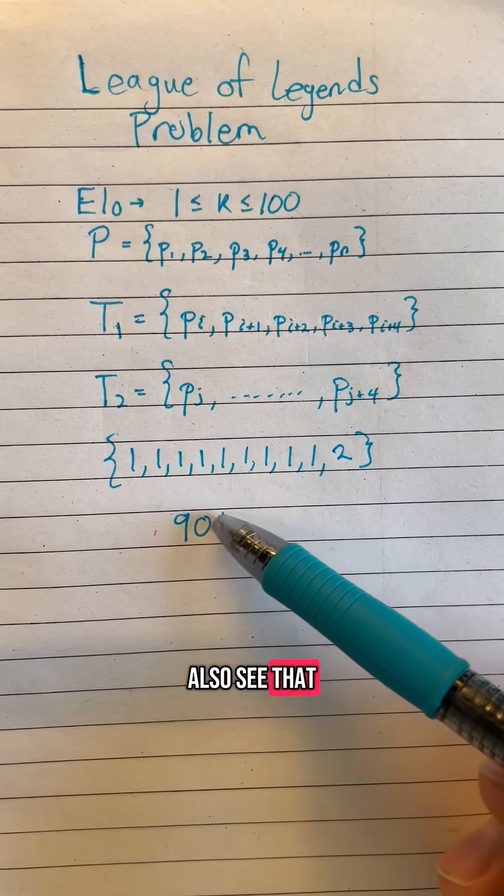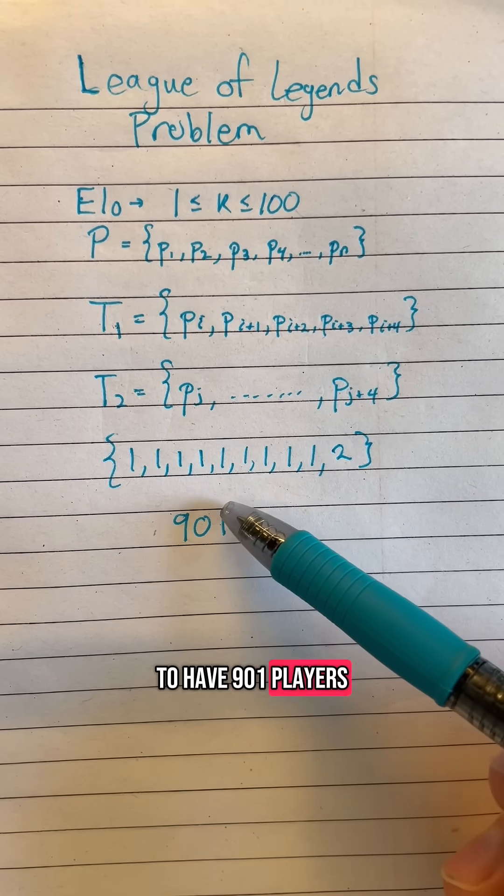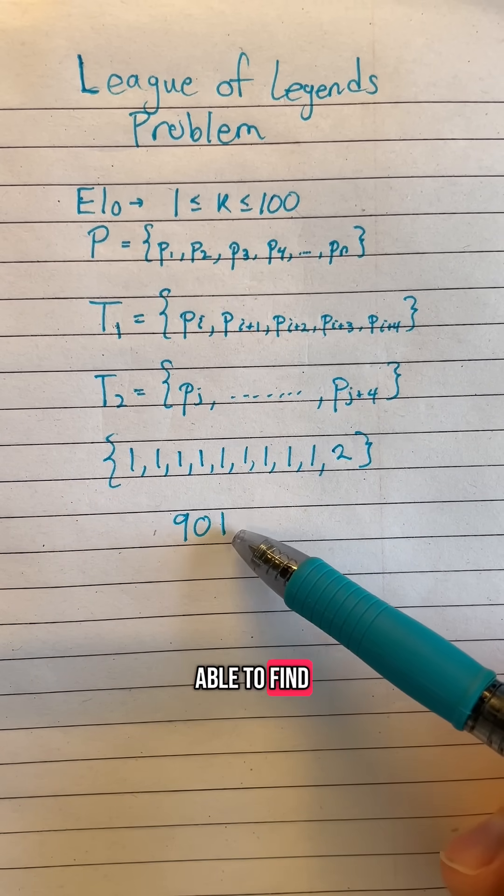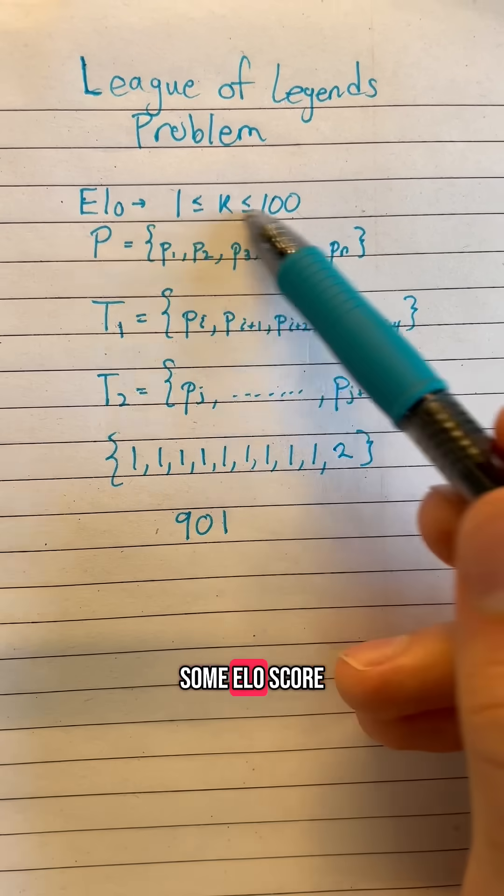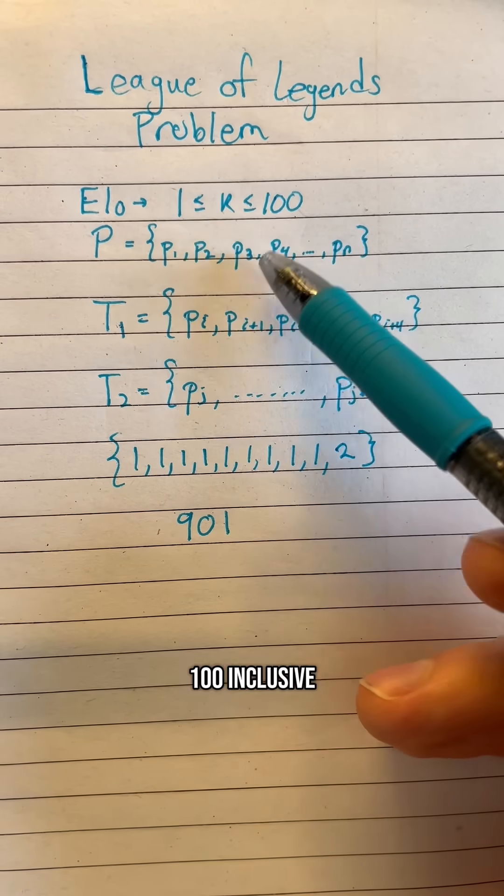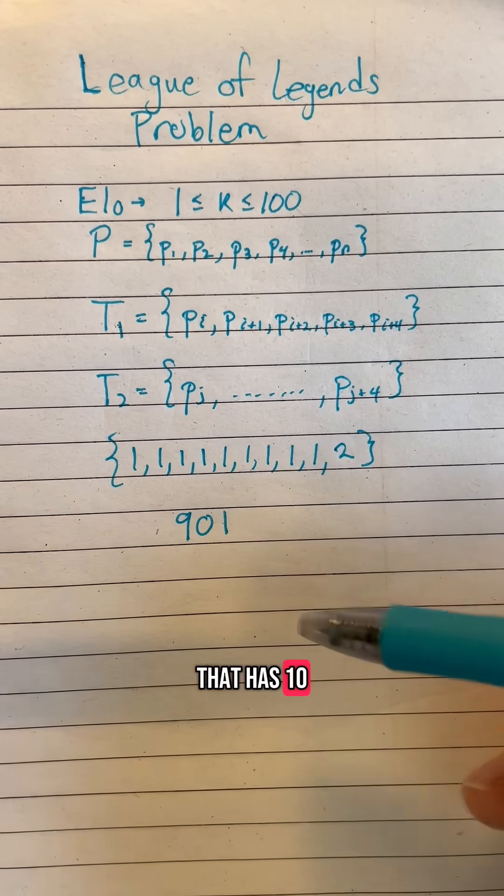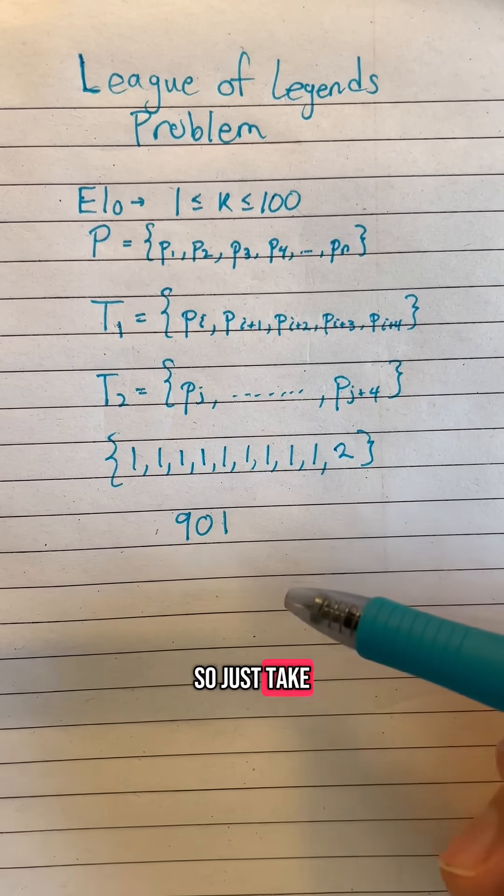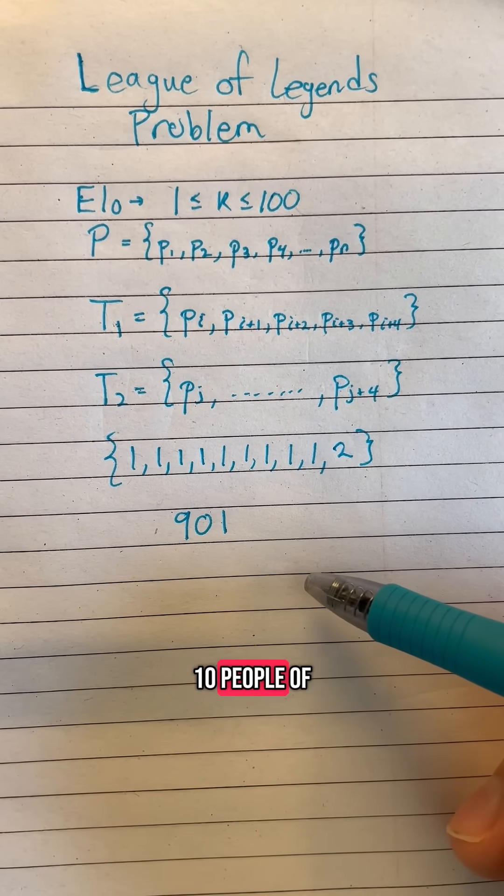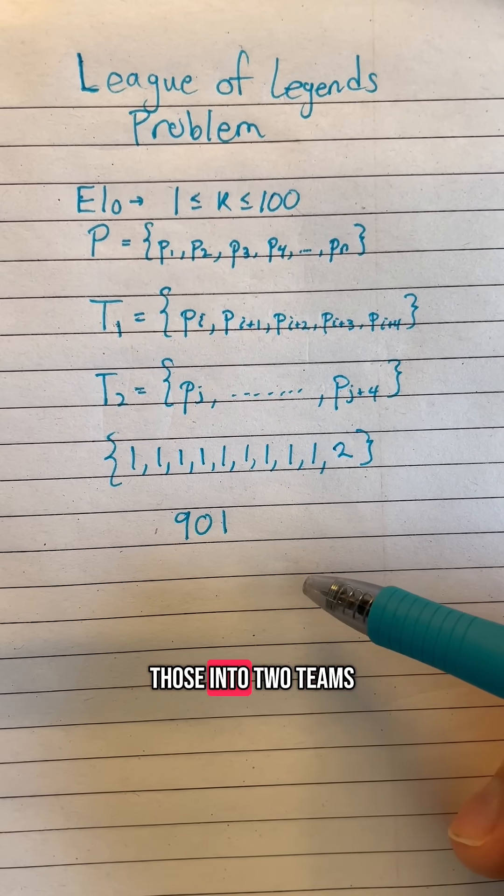But we can also see that if we were to have 901 players, we would be guaranteed to be able to find two balanced teams because if there are 901 players, there must be some ELO score between one and 100 inclusive that has 10 people that all have that same ELO score by the pigeonhole principle. So just take whatever ELO that is that has 10 people of the same score and just divide those into two teams.